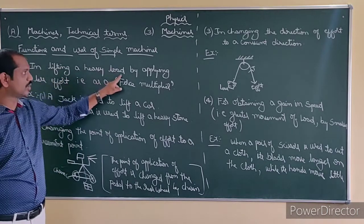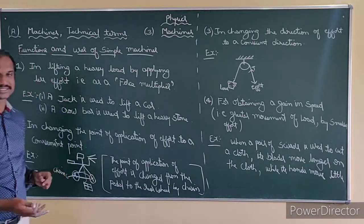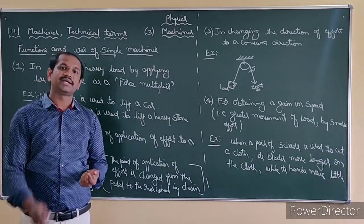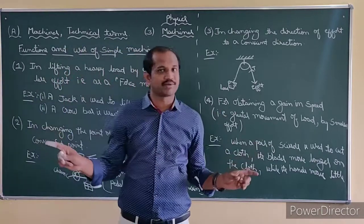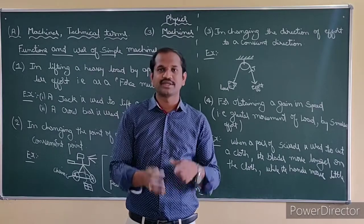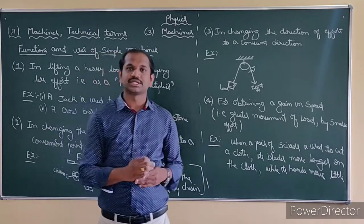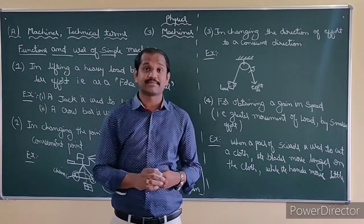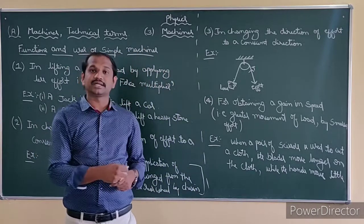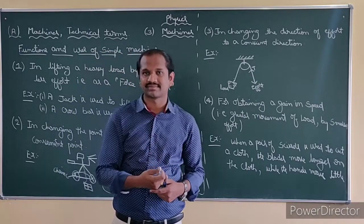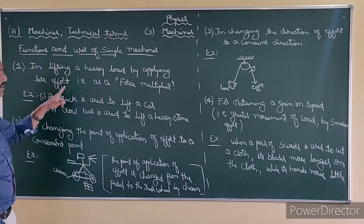Let us see the functions and uses of simple machines. The same thing we do in daily life with machines, we are now speaking about in technical terms of science. The first function: lifting a heavy load by applying less effort. One type of machine can be used for this function. Each machine is different. We use different machines for different purposes. For example, for lifting a heavy load, we use one machine; for taking a bucket of water from the well, we use a pulley.